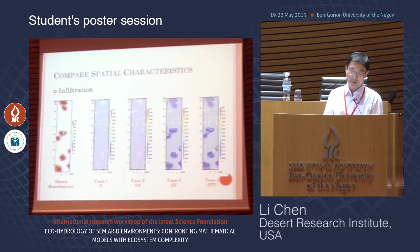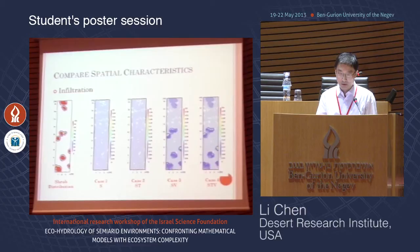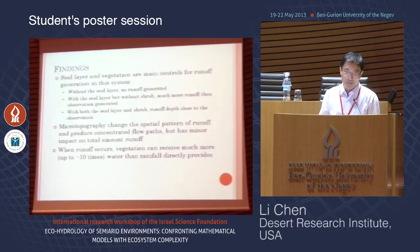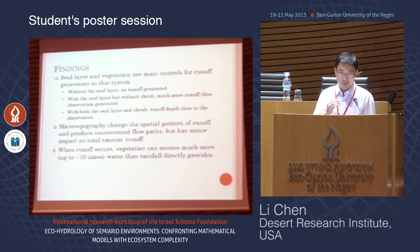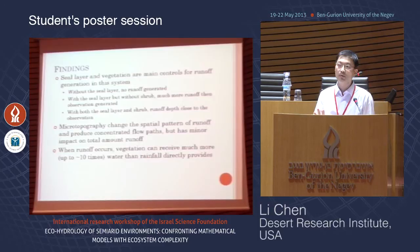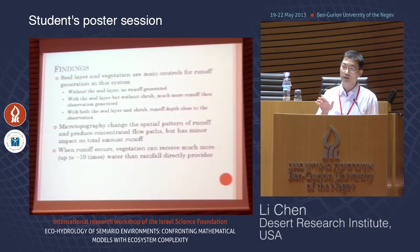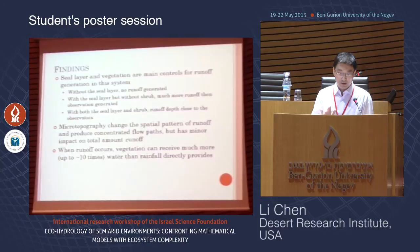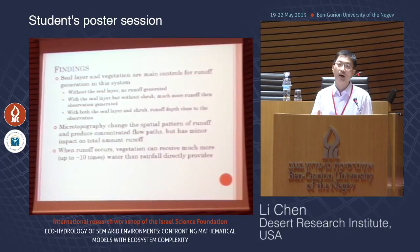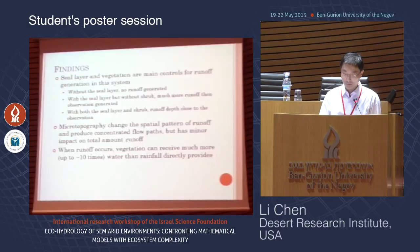The major findings include: the crust layer and vegetation are the major controls of the rainfall-runoff system — if you miss one of them, you won't get the correct result. Microtopography can control how water moves toward plants but doesn't affect total runoff much. Most excitingly, we found that for individual vegetation patches, the vegetation can receive much more water than local rainfall provides — up to ten times the local rainfall.